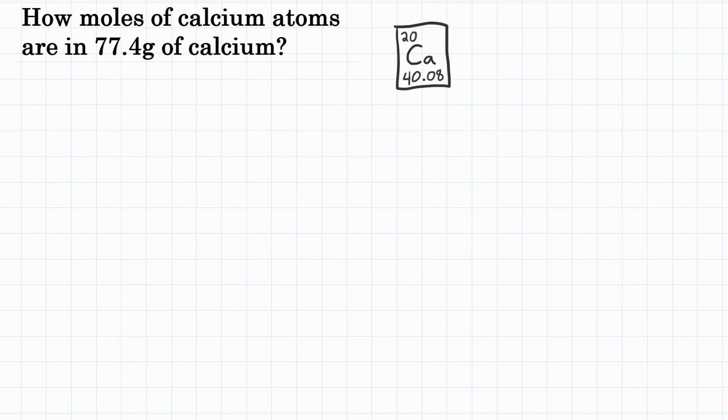All right, how many moles of calcium atoms are in 77.4 grams of calcium? Write down what the problem gives us first. We have 77.4 grams of calcium, and we want to turn that into moles. How many moles is that? Okay, and specifically moles of calcium.